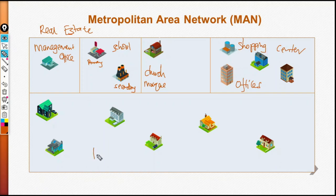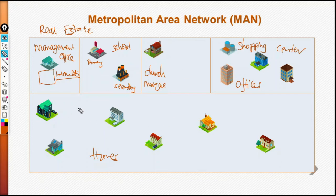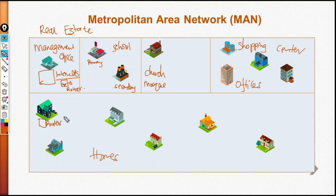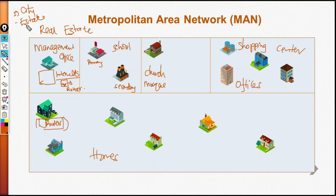Down here we have homes where people live. All of this area, because it's a controlled area, gets internet from one location — the management office is the internet service provider. The same entity manages this whole network. They have done the networking services for all these houses, so if you need internet they have a router here that controls your internet. You also have your own router at home for security and other configurations. This could be a city or an estate.